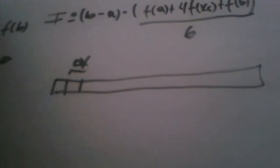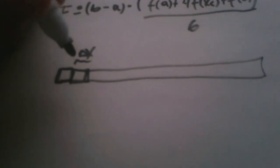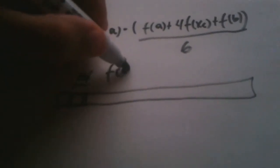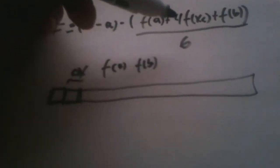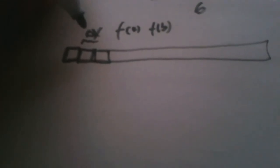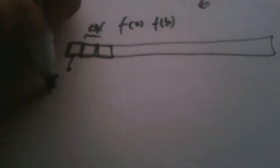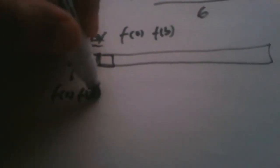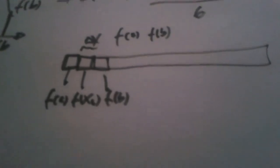In the rectangle and trapezoidal rules we were using each value of the array — the fa or fb function. But this time we have the midpoint fxc. So the easiest way is to use three consecutive positions in the array for calculating this integral: the first one is fa, the second is fxc, and the third is fb.